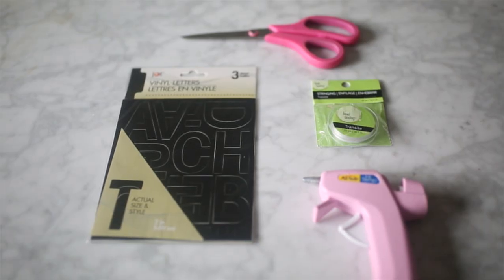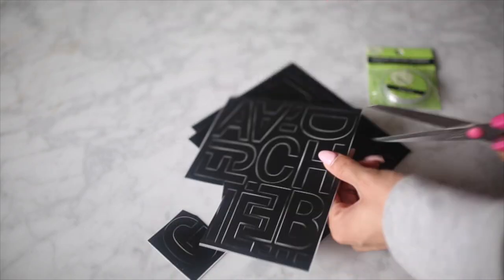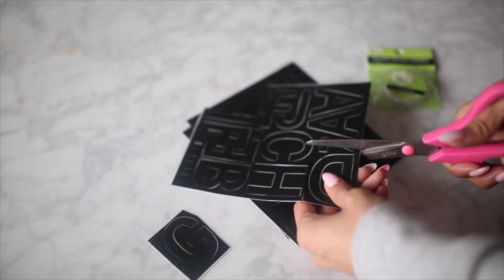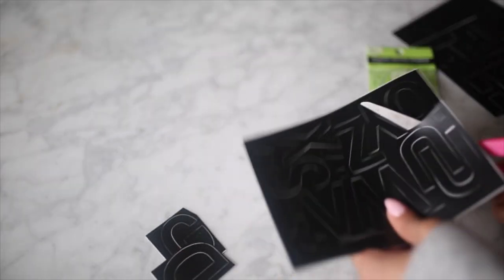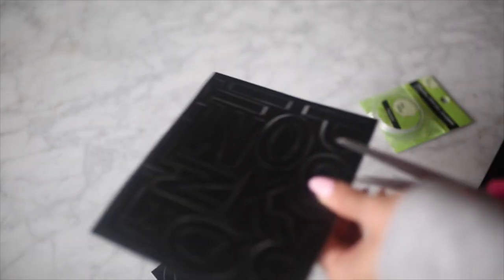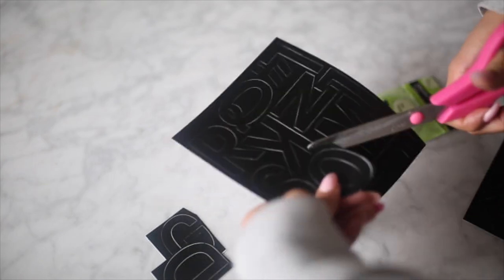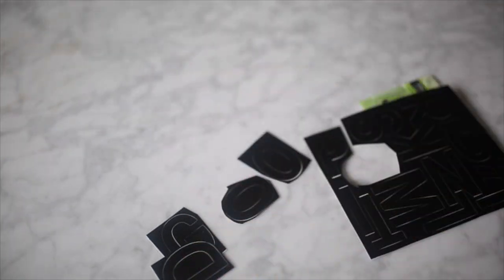DIY number two is this little floating banner that turned out super cute. For this all you need is some sticker letters, some clear string, a hot glue gun, and some scissors. This is super simple. Basically what I did was I cut out the letters that I was using. I decided to just make it say 'good vibes,' but you can either use the backing that's already on the stickers or if you like, you can apply the sticker to a cardstock.